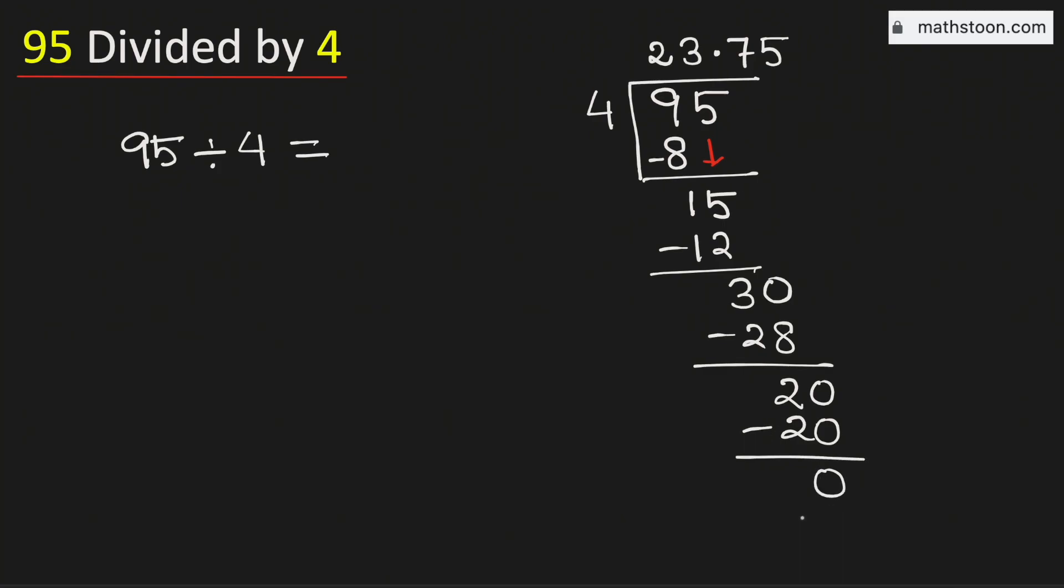As we have obtained the number 0, so we will stop. Therefore, 95 divided by 4 is equal to 23.75. And this is our final answer.